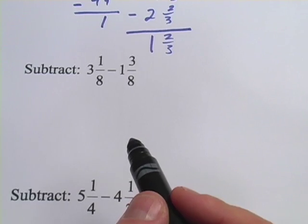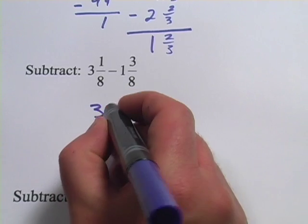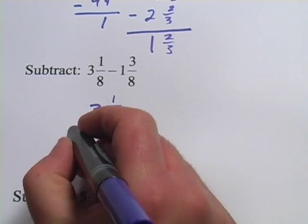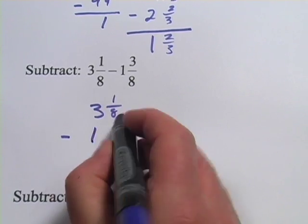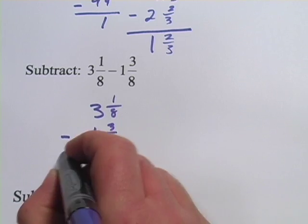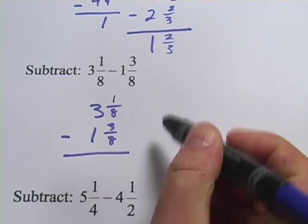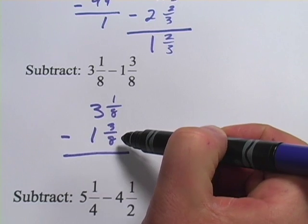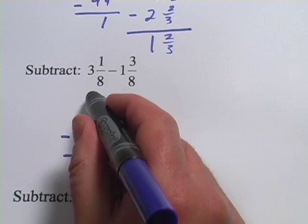Let's try another one like that. I'm going to set it up the same way: three and one-eighth minus one and three-eighths. So starting with the fraction column here, one-eighth is less than three-eighths. So I'm going to borrow, so this three is going to go down to a two.